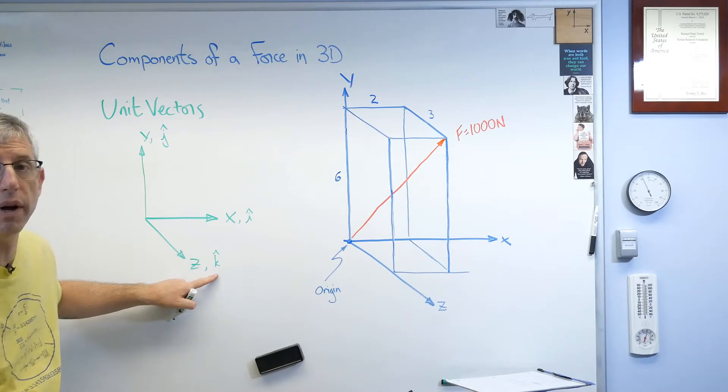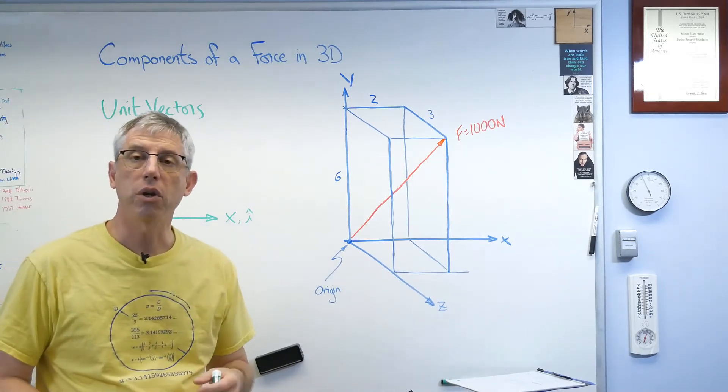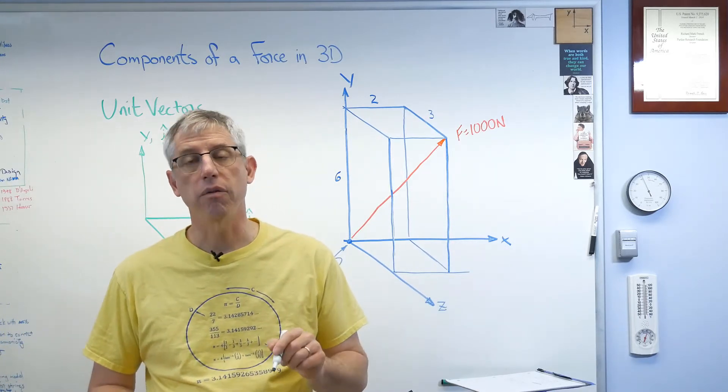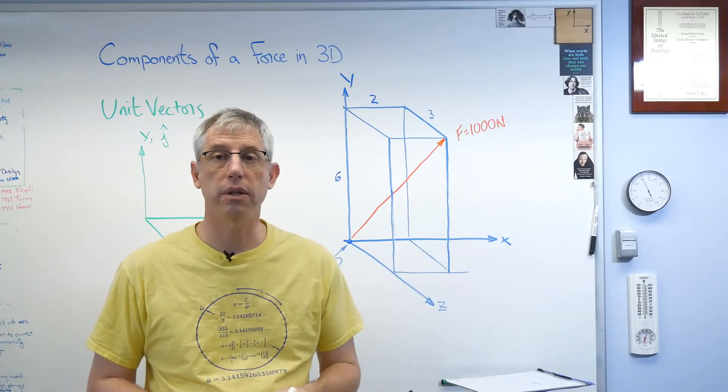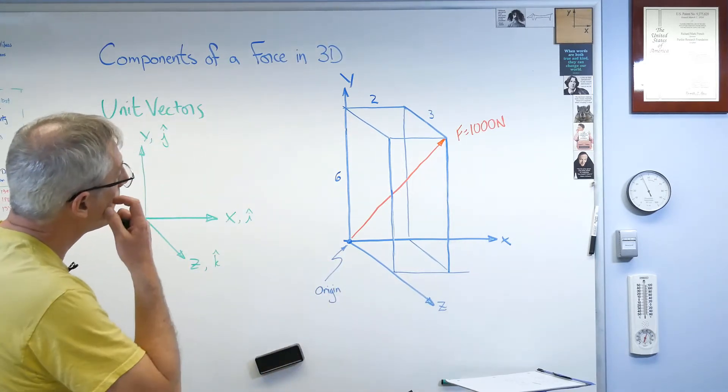This one points horizontal, and this is i and j. You can pretty much guess this one is going to be k. So the unit vector for that is k, has a magnitude of one, and it points out this way. So what unit vectors do, the big idea here is they take scalars and they give them directions without changing their magnitude. That's why it's called a unit vector.